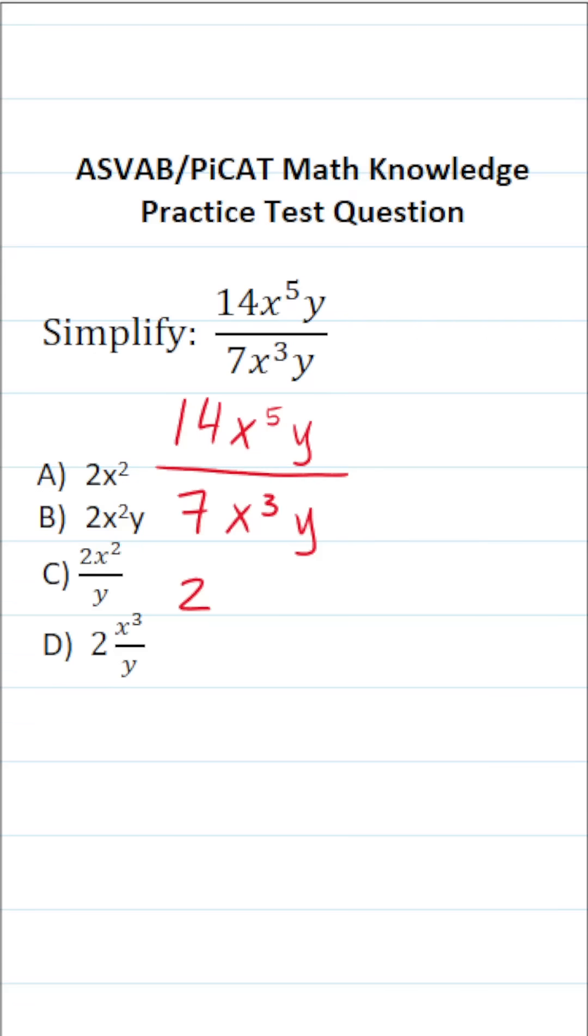In order to simplify the rest of this expression, we have to use some of the laws of exponents, notably the quotient rule. The quotient rule says this: if you have a to the m power divided by a to the n power, that's equal to a to the m minus n. That is to say you subtract the exponents.